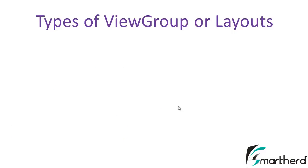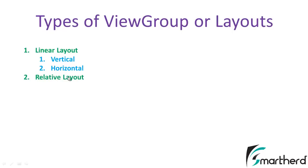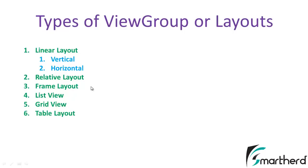Now, what are the types of ViewGroups or layouts? The most commonly used is LinearLayout, which comes in two types: vertical and horizontal. Second is RelativeLayout, third is FrameLayout, fourth is ListView — which is very important in Android — and fifth is GridView.